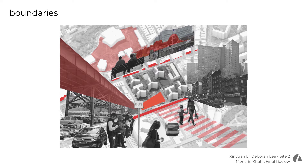On the west side of Site 2 at Broadway, there is a subway viaduct in the middle of the road, and under the viaduct becomes a parking lot. For pedestrians, it is a place to cross and a place where they wait for the bus. So this vehicle-dominated street is also a linear boundary for people that becomes a large-scale fence.